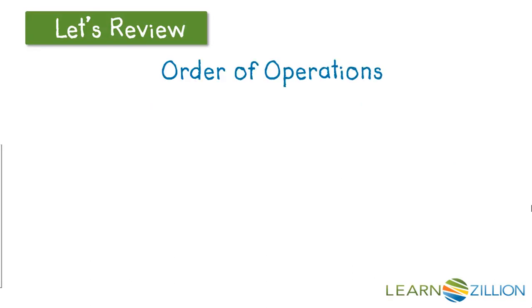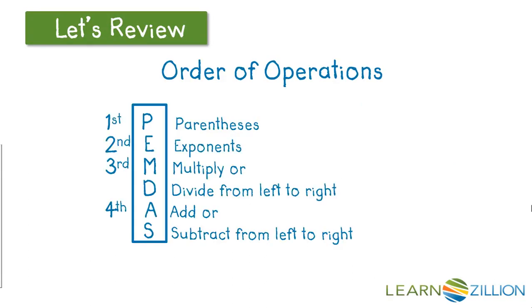The order of operations is incredibly important when we want to evaluate expressions. The first step in the order of operations is to do everything in parentheses first. Step 2 is exponents. Step 3 is to multiply or divide from left to right. And Step 4 is to add or subtract from left to right. Today, we're going to focus on Step 2, exponents.